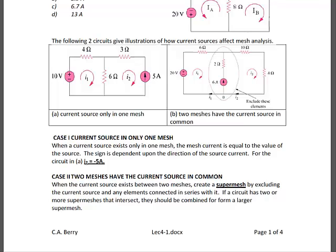Recall, KVL is used to find mesh currents. So if you know that the current is negative 5 amps with respect to I2, you don't do KVL. It's important to note that I made I2 equal to negative 5 amps because the 5 amp current source points counterclockwise while I2 points clockwise. If I2 had also been labeled counterclockwise, then I2 would equal positive 5 amps.